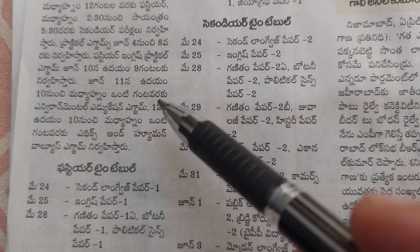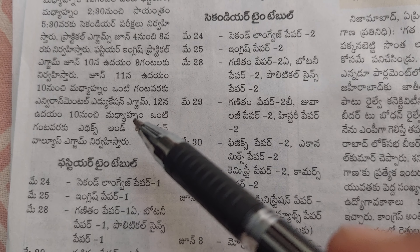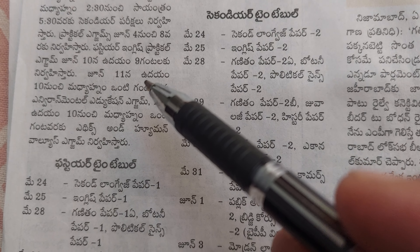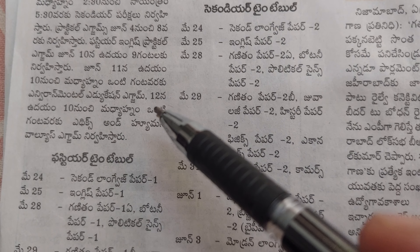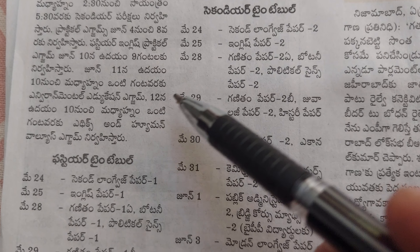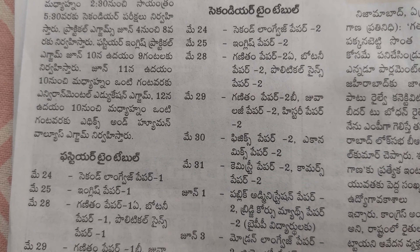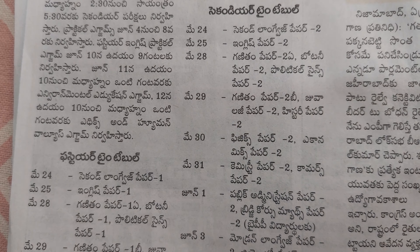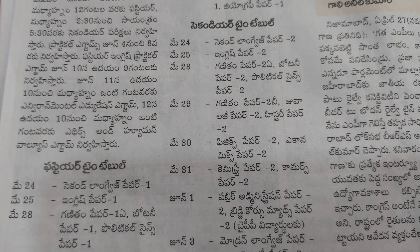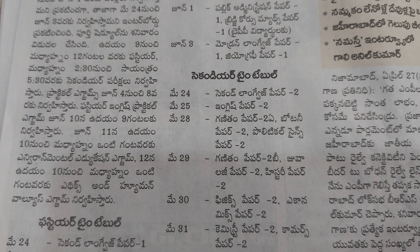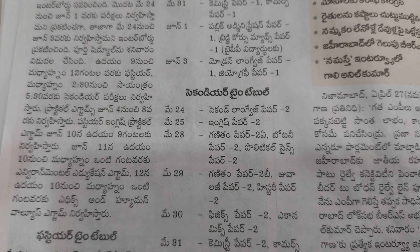And the environment exam — if anybody has failed, and for old inter students, ethics exam: environment is on June 11th, ethics is on June 12th, timing 10 to 1. So these are for failures or old students — environment and ethics examination. This is the updated timetable.